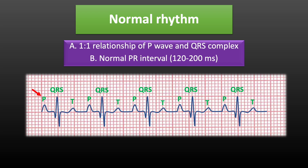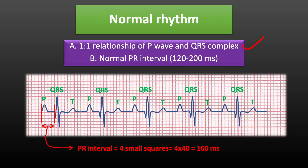In our ECG rhythm, each P wave is followed by a QRS complex. Hence, 1-to-1 relationship of P wave and QRS complex is maintained throughout. Now we calculate PR interval, which is measured from initiation of P wave to the initiation of QRS complex. This is equivalent to 4 small squares. Each small square on ECG paper is equal to 40 ms. Hence PR interval in this case is 160 ms, which is within normal limits. So this ECG doesn't have any AV block and shows normal rhythm.